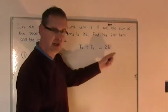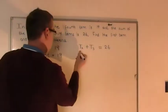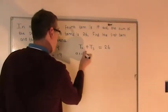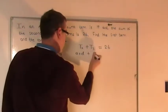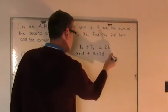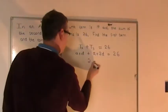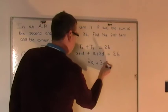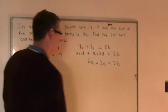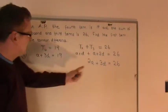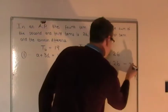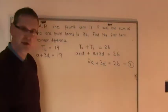Do the same sort of thing for this over here. T2 can be written as A plus 1D, plus T3 is A plus 2D, and that's equal to 26. Let's just tidy this up: you've got 2A plus 3D equals 26. Obviously again the same two unknowns, can't solve it on its own, equation 2.